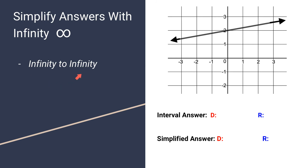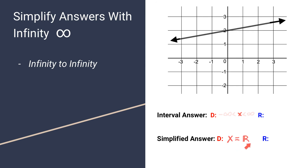In this last example, the graph goes from infinity to infinity. Whenever a graph has arrows going off to the left and right, it covers every possible x value. We write the interval as negative infinity is less than x, which is less than positive infinity. By removing the infinity symbols, you're left with just x, and we show it represents every number by writing x equals the real numbers symbol, a capital R. We do the same for range: with arrows going up and down, every y value is covered, so y equals all real numbers. That's the more simplified way of writing these answers.